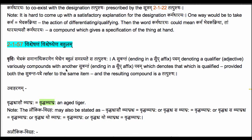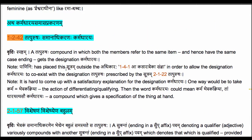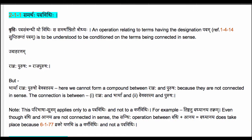Such a tatpuruṣa compound is called karmadhāraya. Compare this to compounds derived earlier — for example, rājñaḥ puruṣaḥ, giving rājapuruṣaḥ, the king's man. There, the king and the man are two different entities. That is called a vyādhikaraṇa tatpuruṣaḥ — when the two members of the compound don't point to the same entity. When we encounter a tatpuruṣa samāsaḥ, it is a good habit to ask: is this a vyādhikaraṇa or samānādhikaraṇa tatpuruṣaḥ?